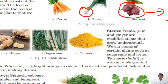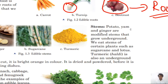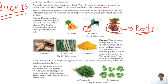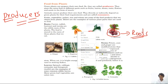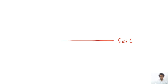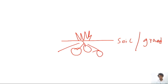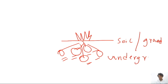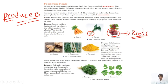Potato, yam, and ginger grow underground — below the soil. Potatoes always grow underground; we call that underground growth. We also eat stems of certain plants such as sugarcane and lotus. These are all examples of stems.